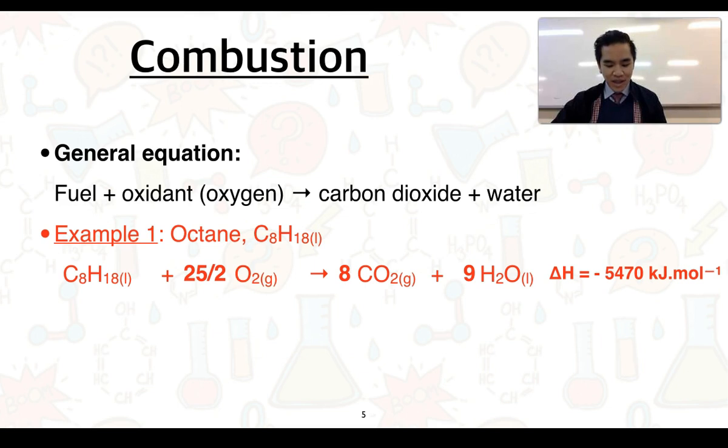The last thing we need to include is the delta H value or the enthalpy change for the reaction. Given that there is one mole of octane undergoing complete combustion, this is going to give us a value of negative 5470 kilojoules per mole. The negative indicates this is an exothermic reaction, meaning it is going to release this energy.